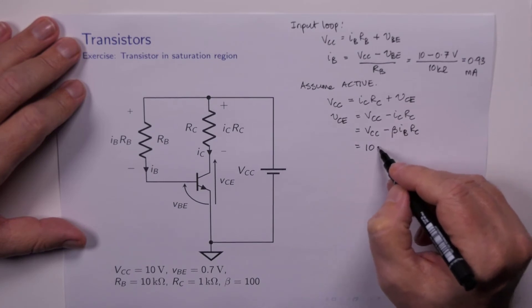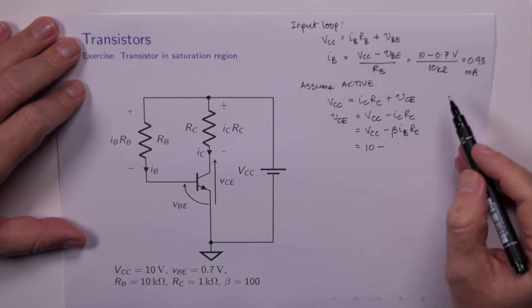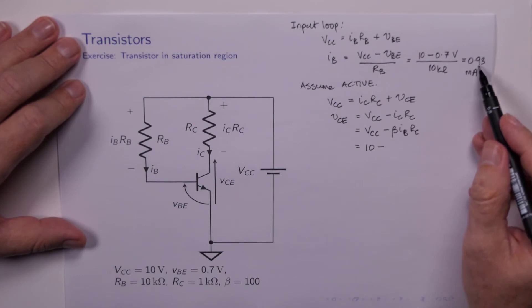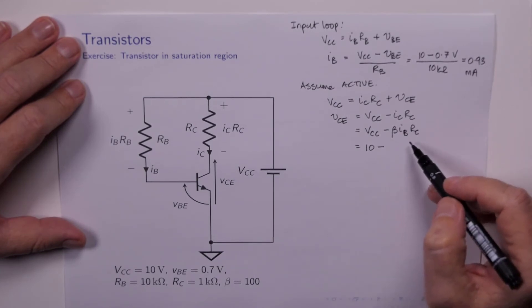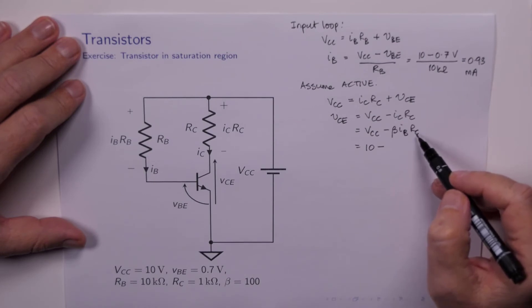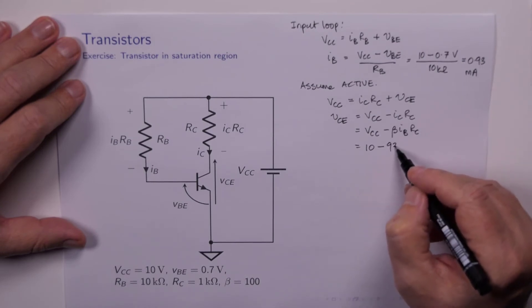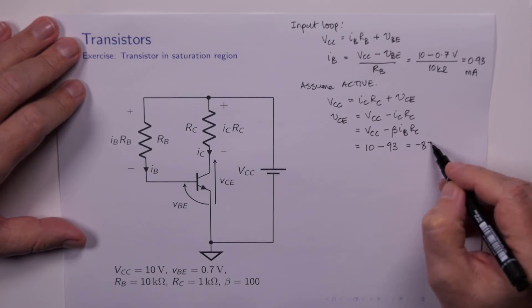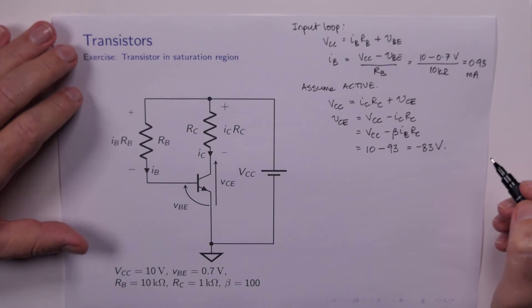So this will be VCC minus beta times IB RC. So that's 10 minus, beta is 100, so that's 100 times 0.93, which is 93 milliamps. 93 milliamps times RC, which is 1K ohm,